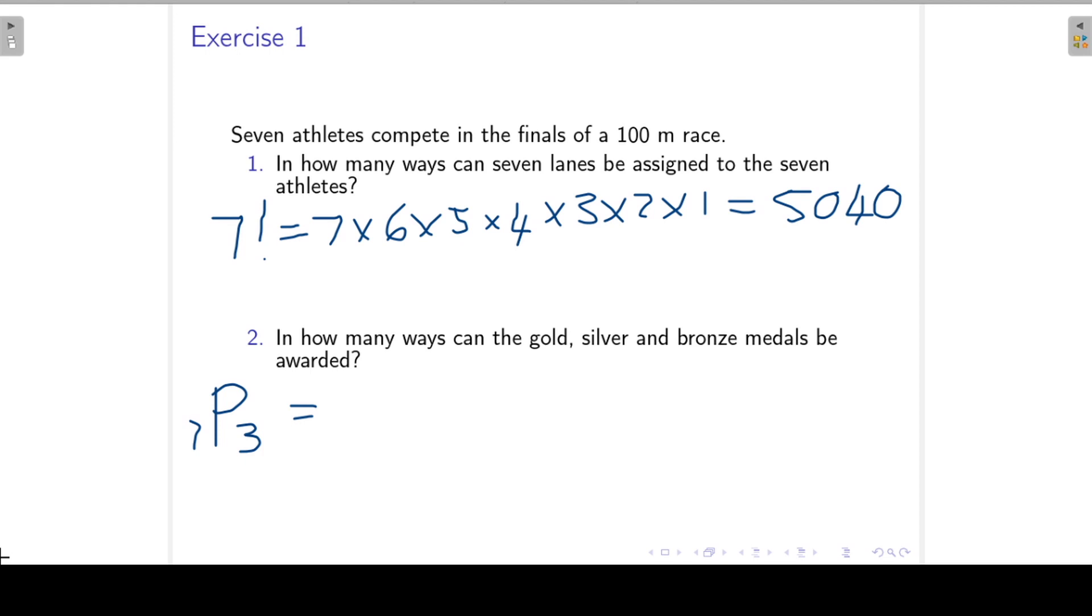And by definition that's equal to seven factorial over seven minus three factorial. You will see that I write seven factorial as seven times six times five times four factorial, and the reason for that is it makes it a lot easier because then I can cancel out the two four factorials. And this answer then is equal to 210.